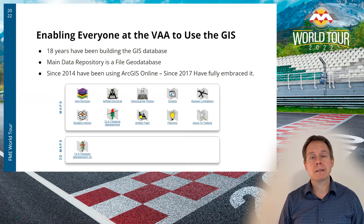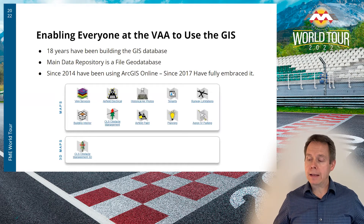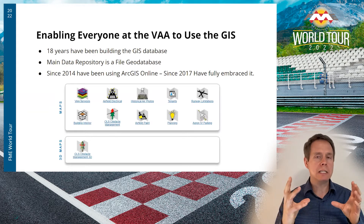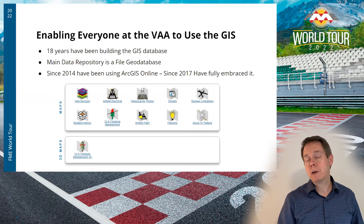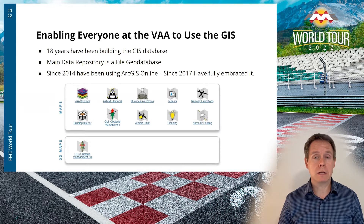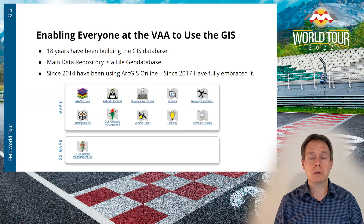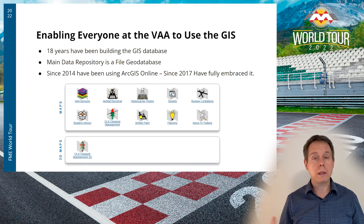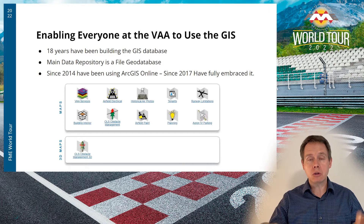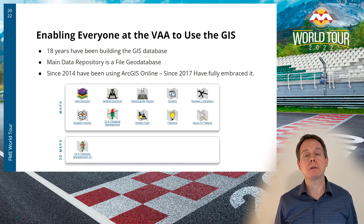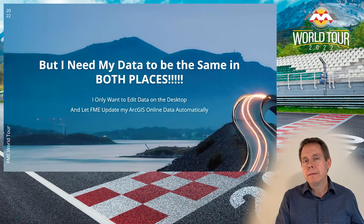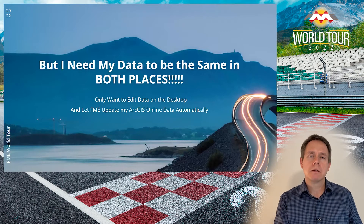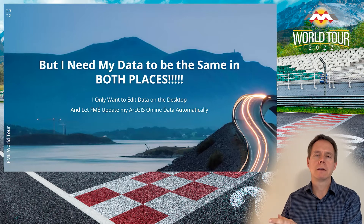Our main file repository is just a file geodatabase — a desktop geodatabase. Since 2014 we've had ArcGIS Online, but since 2017 we really embraced it. It's amazing for getting our information out to everyone at the airport, including consultants. You see a screenshot here of one of the dashboards on our main Victoria Airport internal dashboard that helps us get to all the different theme maps we've created with ArcGIS Online.